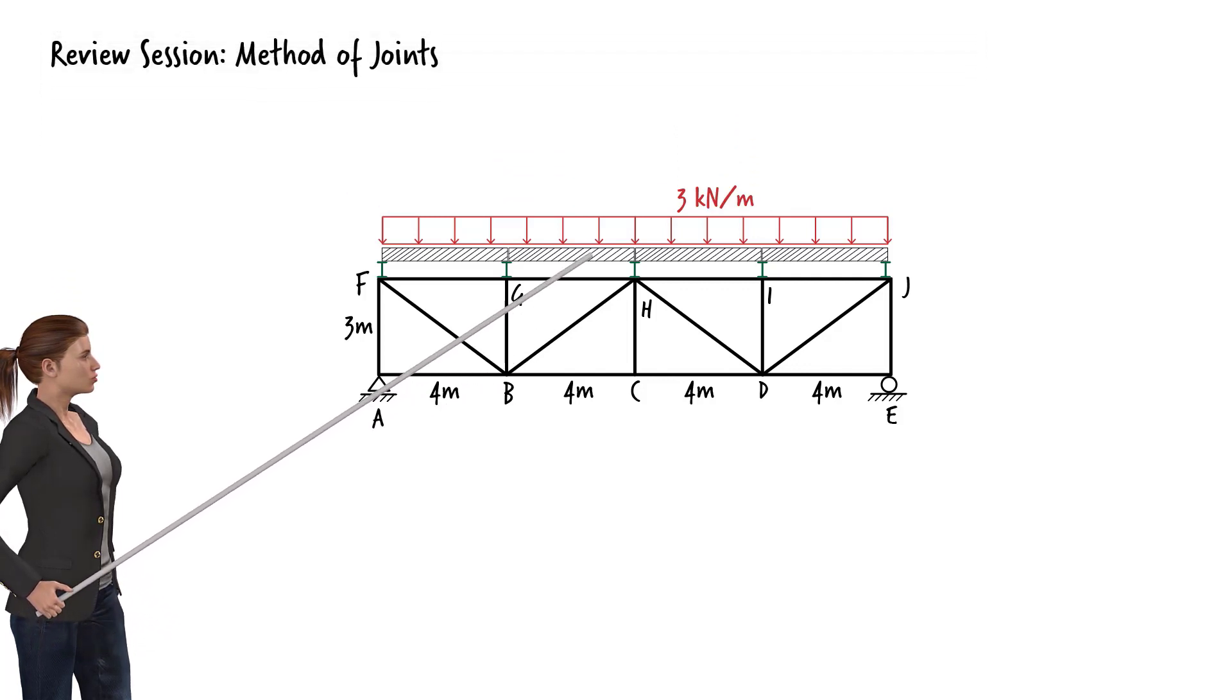As you can see, the floor carries a uniformly distributed load of 3 kN per meter. We know that the truss can only carry joint loads. But here we have a distributed load. So we need to translate the distributed load into loads that can be placed on the joints of the truss.